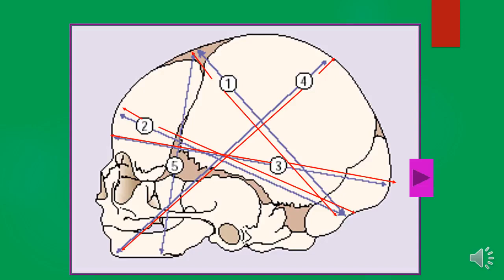The fourth diameter is called the mental vertical, and as you can see from the diagram, this is the longest diameter of them all. The mental vertical is about 13.5 to 14 centimeters. It is measured from the point of the chin up to the highest point on the vertex, slightly nearer to the posterior than to the anterior fontanelle.